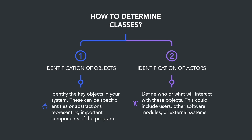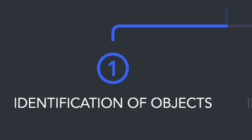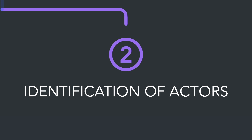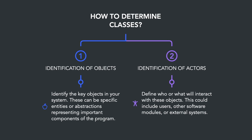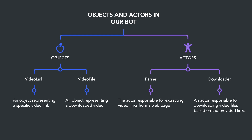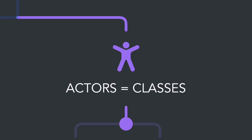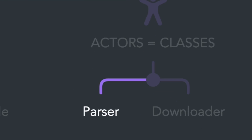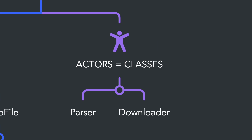What classes will we have? To understand, define the main objects in the system, then determine who or what will interact with these objects. In our video link parsing and downloading bot, the objects could be the video link and the video file. The actors interacting with these objects would be the parser and downloader — these actors are our classes. Let's create files for these classes.